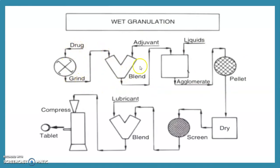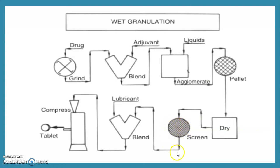In wet granulation: first the drug is ground, then blended with adjuvants, then agglomerated by addition of a suitable granulating liquid to form a coherent mass. The mass is passed through a sieve, dried, screened again to remove very fine particles, then lubricated with lubricant, and finally compressed.